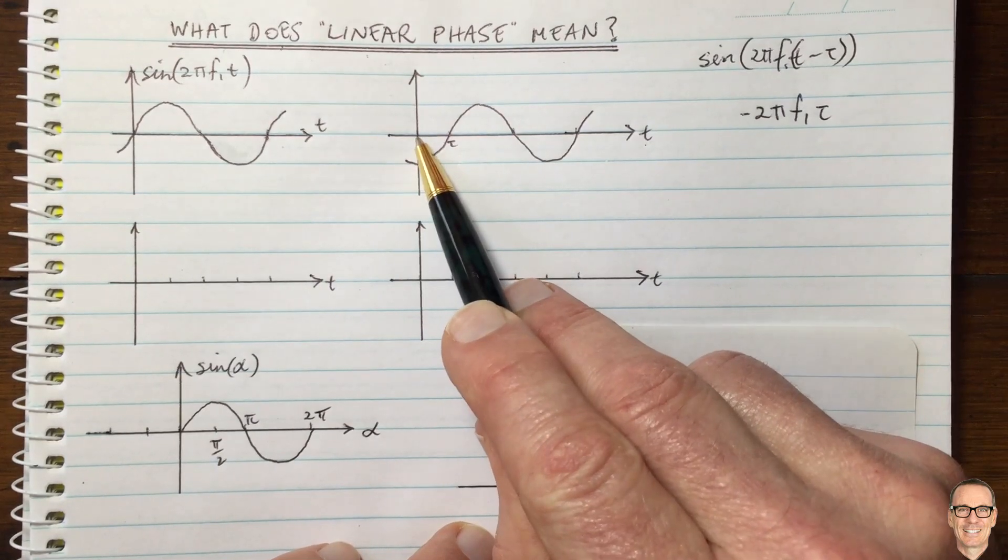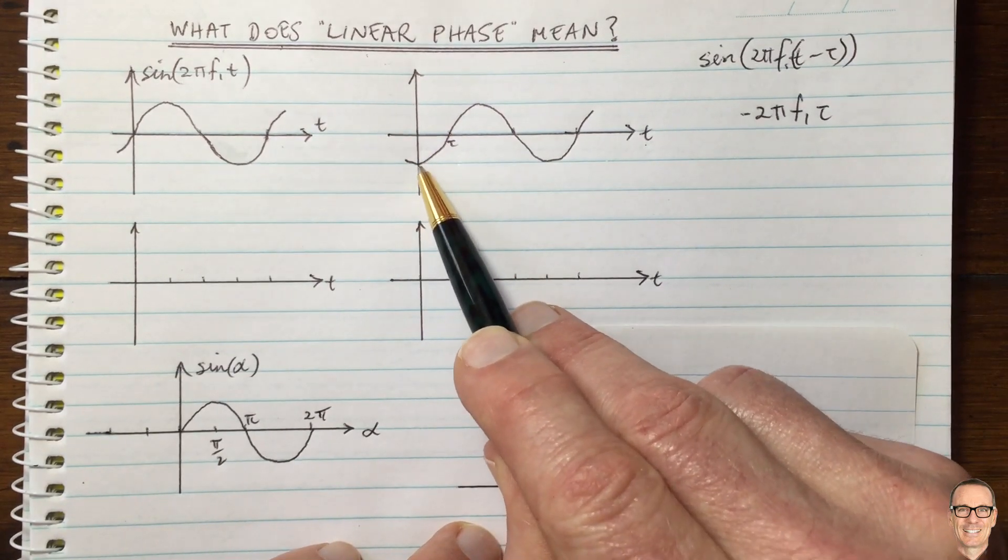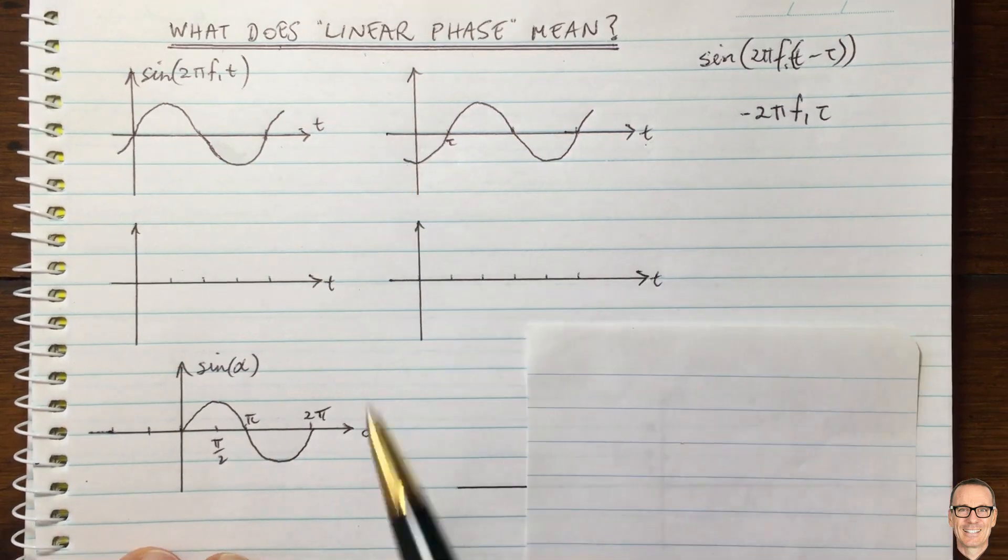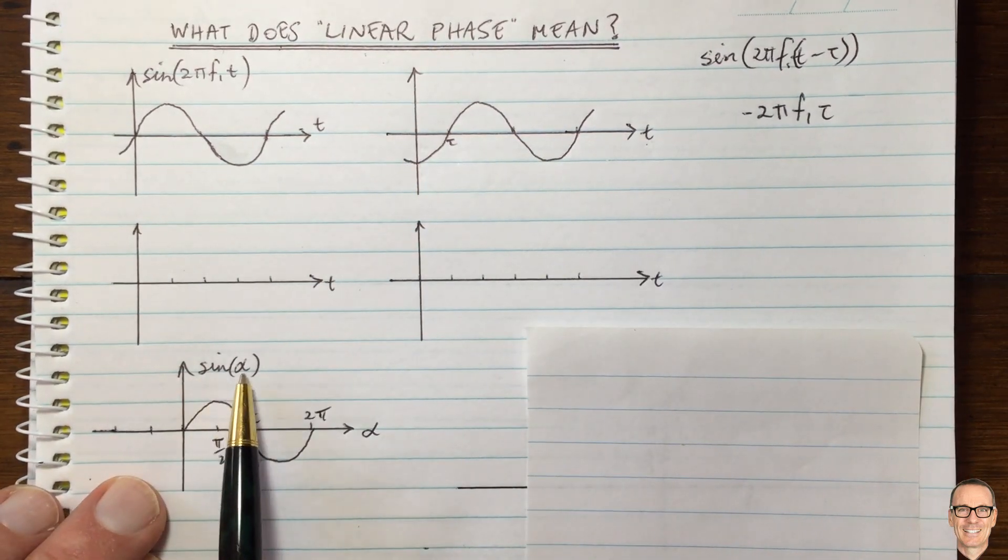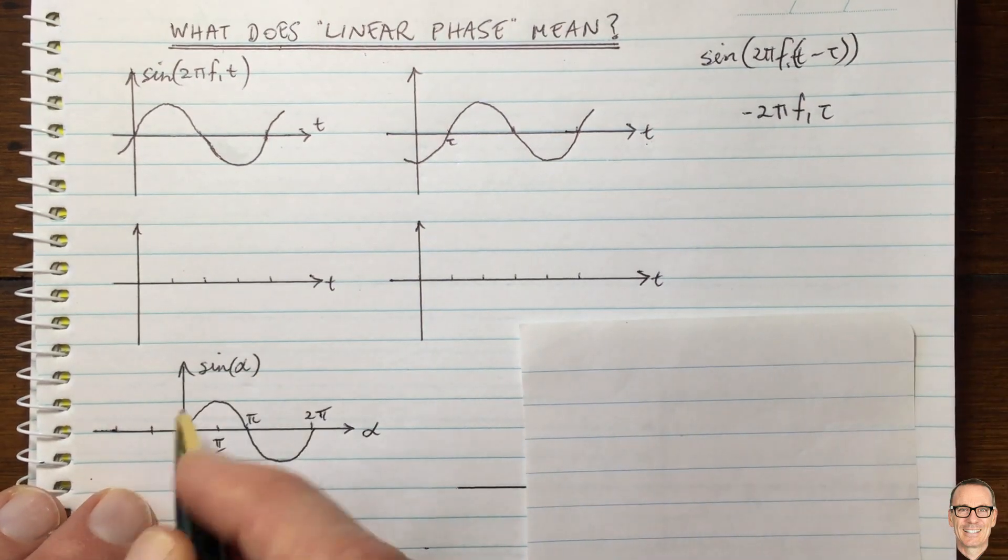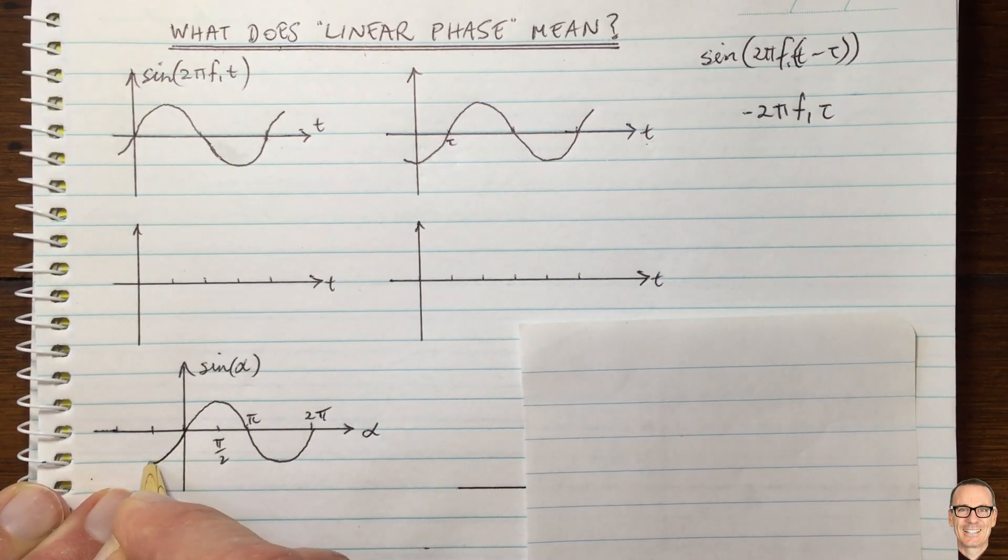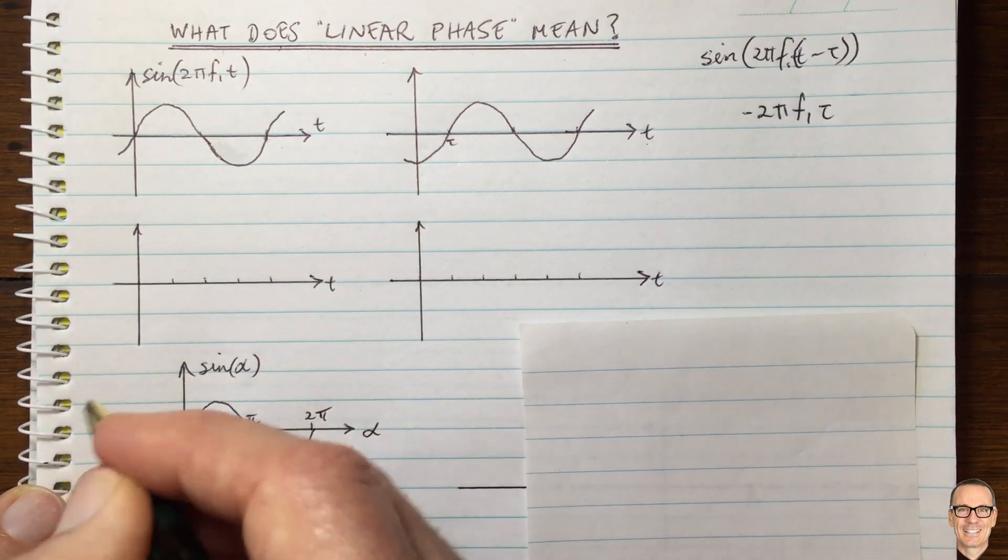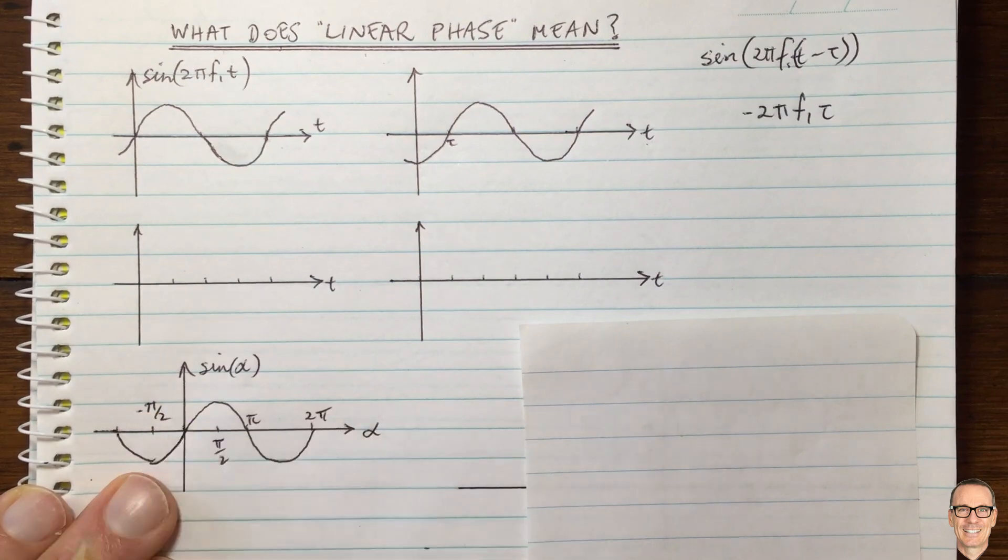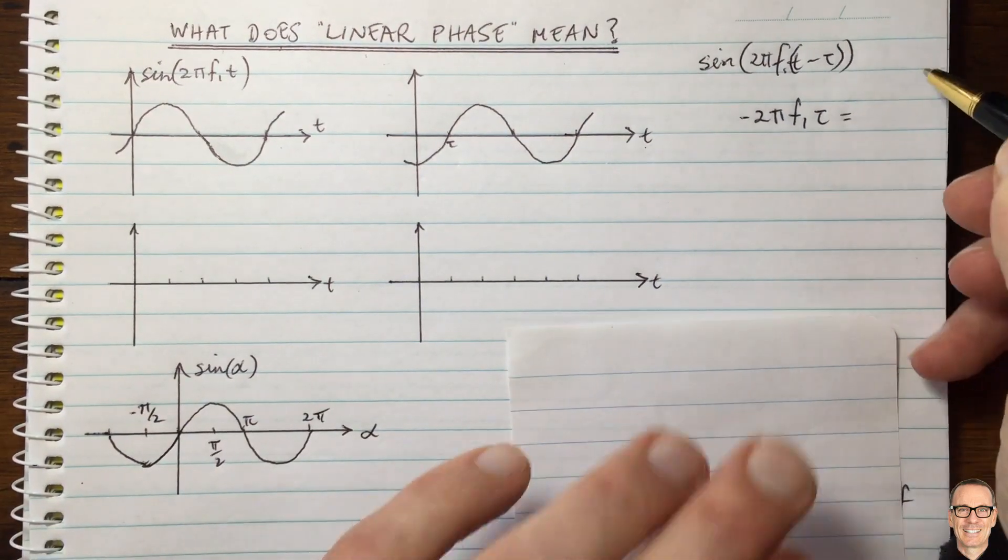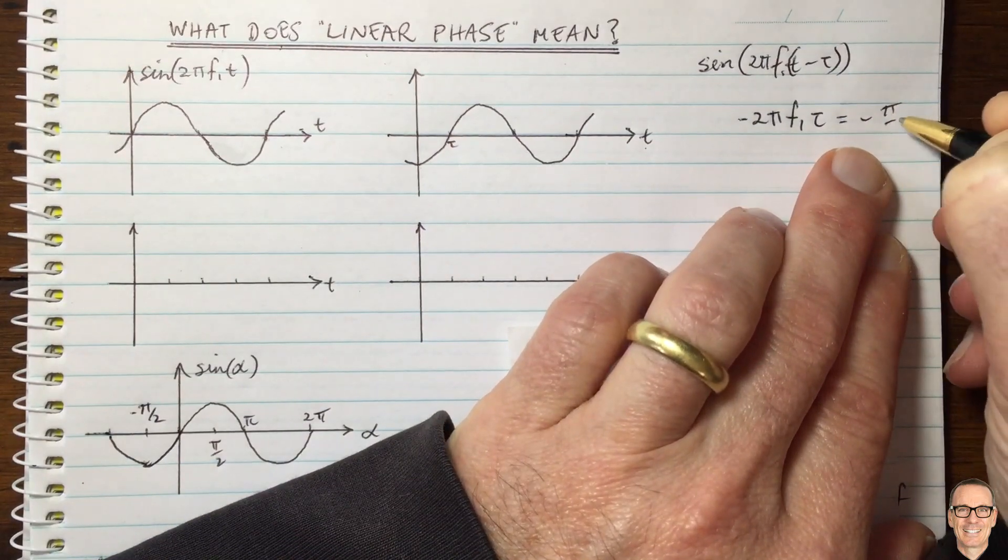When t equals zero, we're here. When t equals zero, the value of our function is here, the most negative that it goes. So let's look down here. When sine of the thing in the brackets, this is what we've got here, the thing in the brackets, when sine of the thing in the brackets is the most negative it can be. That is when the thing in the brackets alpha equals minus pi divided by 2. Okay, so this equals minus pi divided by 2.